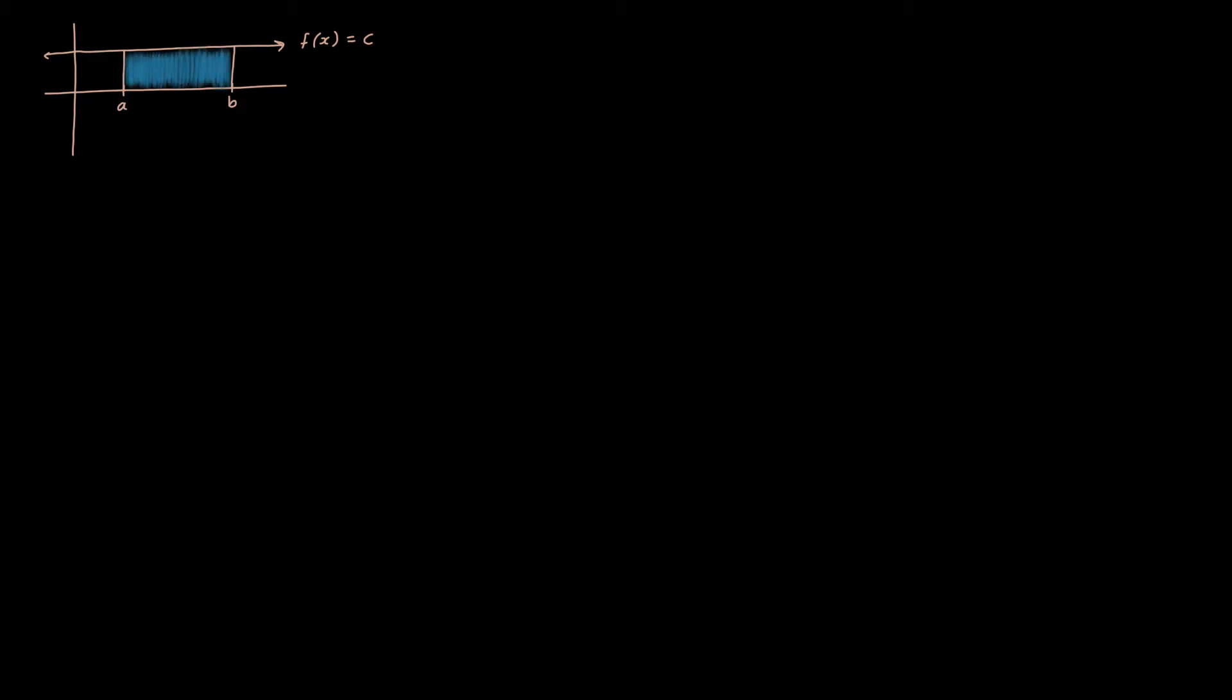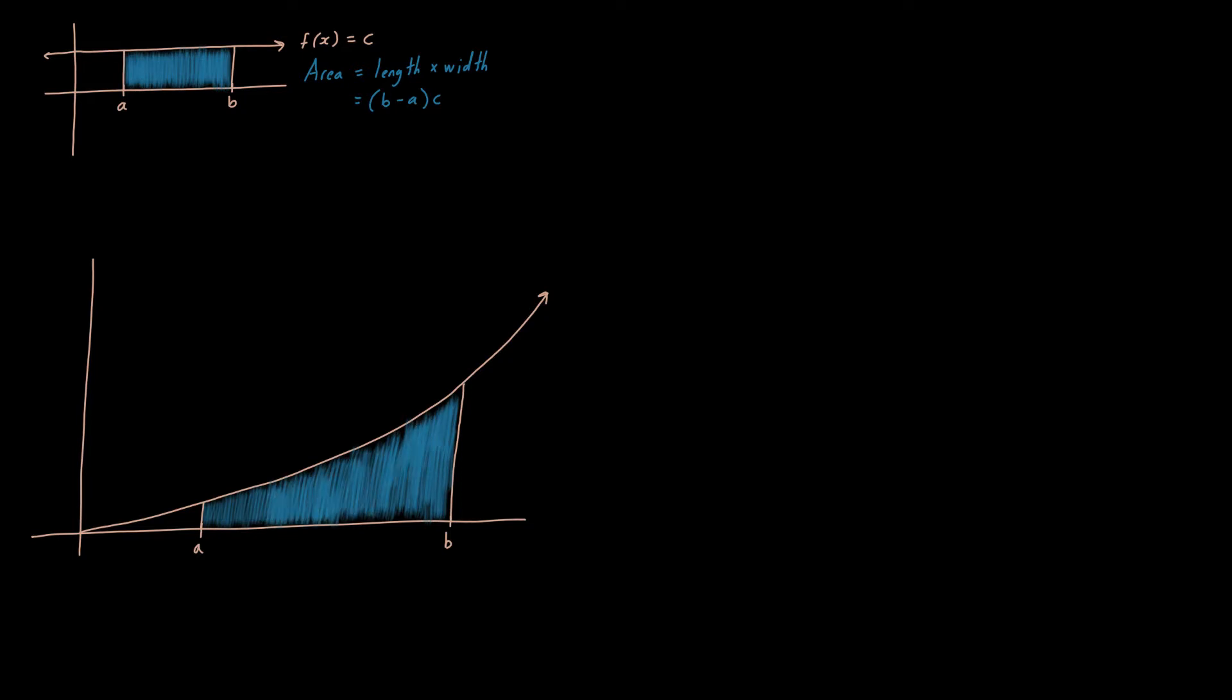If I were to ask you to find the area of that rectangle, it's a simple matter of saying length times width. In this case, c times b minus a. Now how in the world would I tackle something like this? Let's say I got a parabola, say y equals x squared, and I want to find the area sandwiched between the graph and the x-axis between x equals a and x equals b. How am I going to go about doing that? Is that even humanly possible? Well, I guess we'll have to find out. Area for now is a question mark.